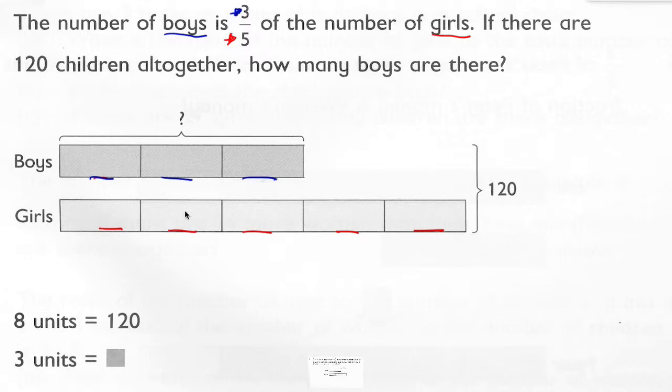Now, they go on to tell us that there's actually 120 children, 120 children all together. How many boys are there? So this bracket here shows us 120 children, boys and girls. And we want to know how many boys there are, just these three sections.